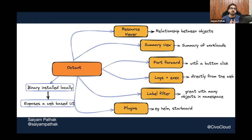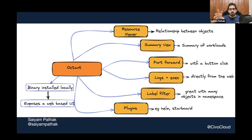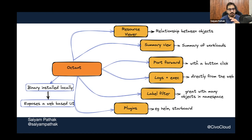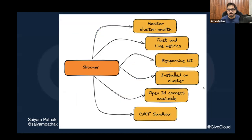Octant has a very interesting plugin support system. People have developed plugins — for example, a Helm plugin and a Starboard plugin (for security scanning). If you download plain Octant, you won't see these by default. You place the plugin tar file in the ~/.config/octant/plugins directory and those plugins become available.